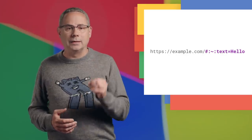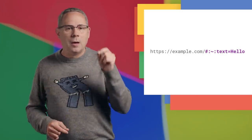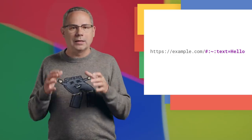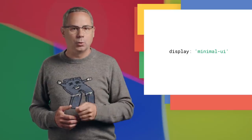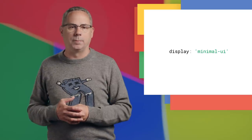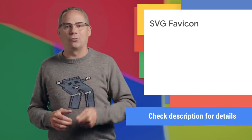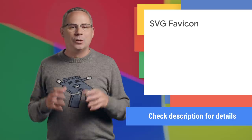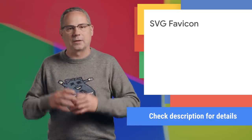You can now link directly to text fragments on a page by using hashtag colon tilde colon text equals something. Chrome will scroll to and highlight the first instance of that text fragment. Setting display minimal-ui on a desktop PWA adds a back and reload button to the title bar of the installed PWA. And Chrome now supports using SVG images as favicons. I couldn't fit all of Chrome 80's new stuff in this video, so check out the updates post linked in the description for all the details, including links, docs, specs, and more.